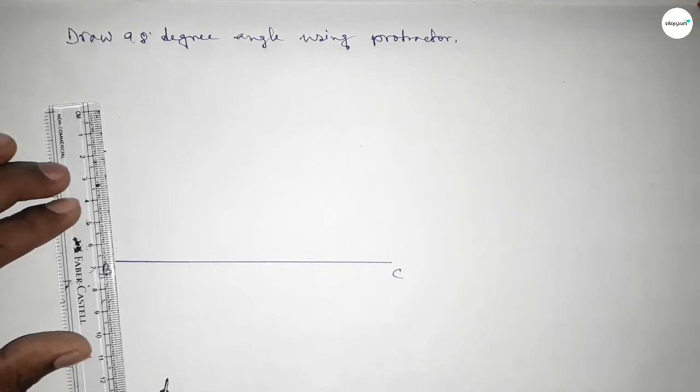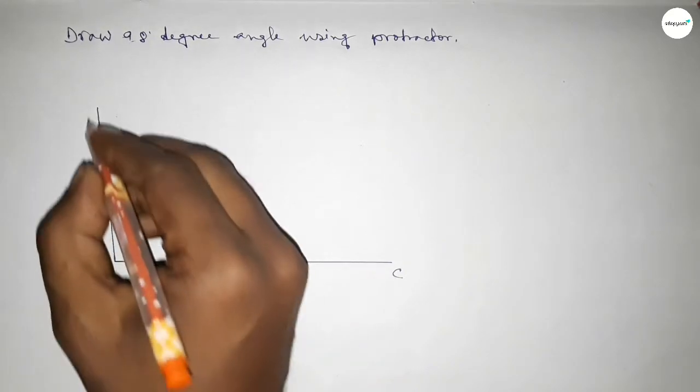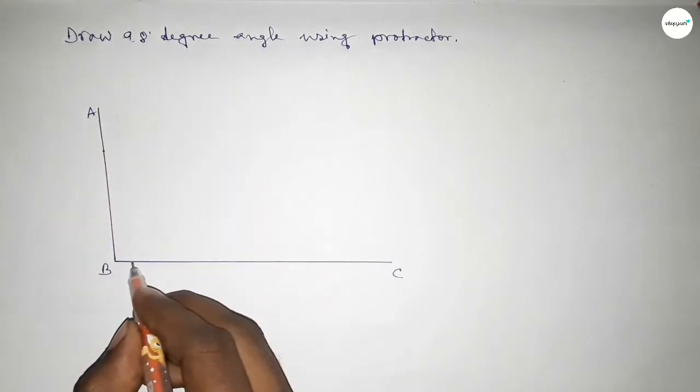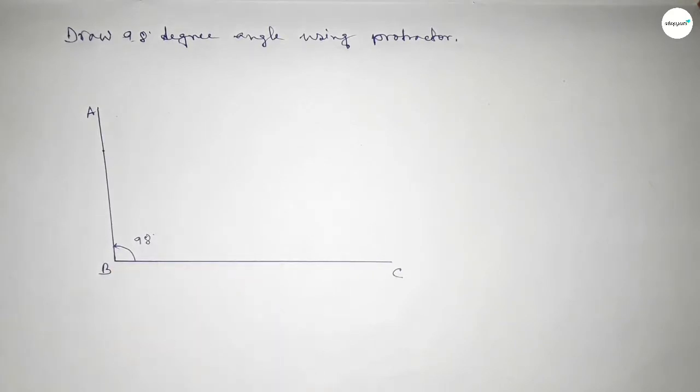So joining this one and taking here point A. Angle ABC - this is a 98-degree angle.